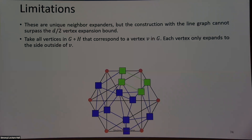What are the limitations of this technique? This creates unique neighbor expanders — that's great. But we can't surpass the D/2 bound using this construction. Why? If I take any copy of my small graph H and the vertices that correspond to that copy, all those vertices will expand into each other. That means each of these vertices will only have one edge coming out — only one unique neighbor. So once again, strictly this D/2 bound shows up.